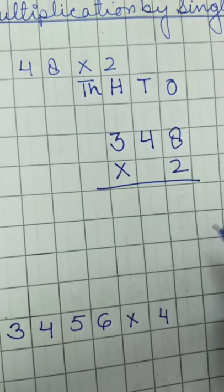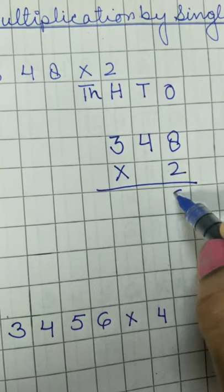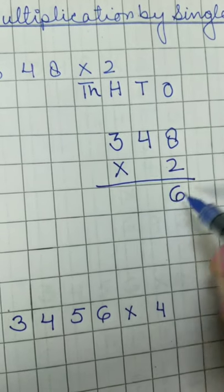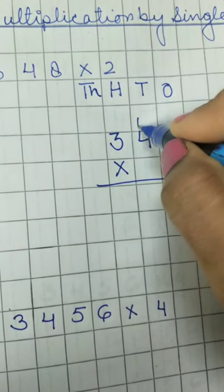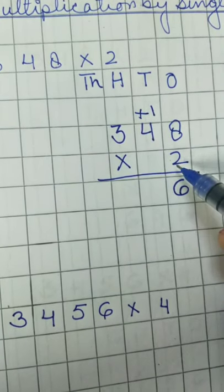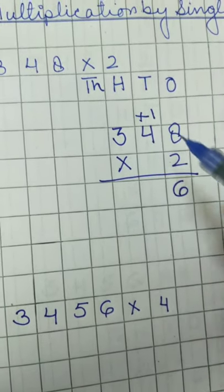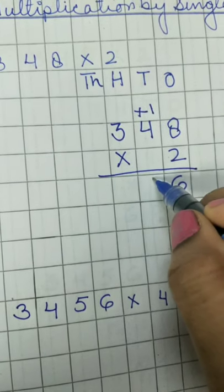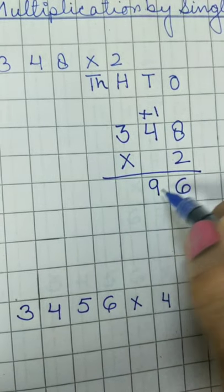2 times 8 is 16. We will write 6 here and 1 will carry. 2 times 4 is 8. 8 plus 1, 9. So we will write 9 here.